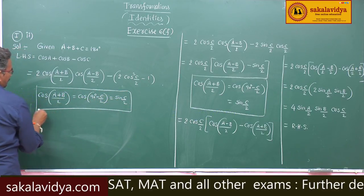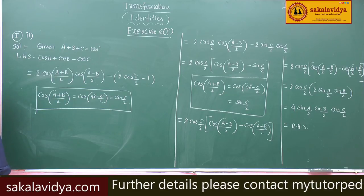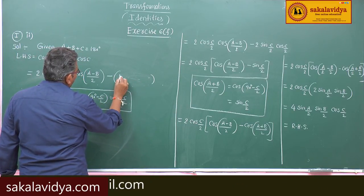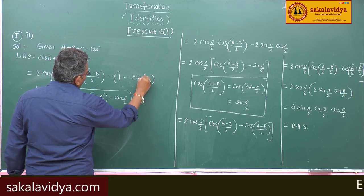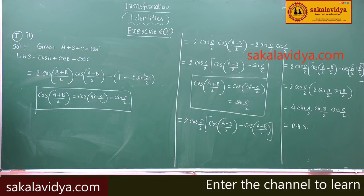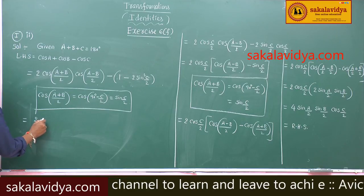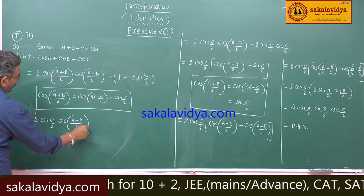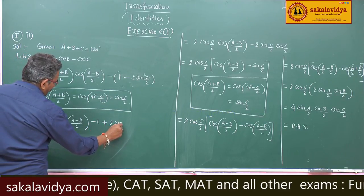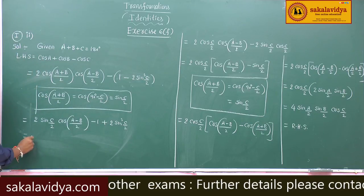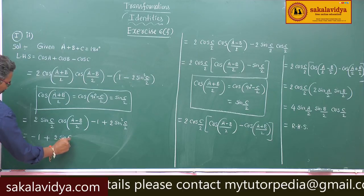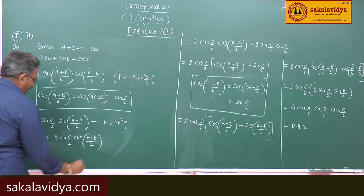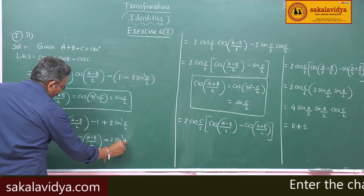Now cos c can be changed to 1 minus 2 sin²(c/2). So this becomes 2 sin(c/2) cos of (a minus b)/2.